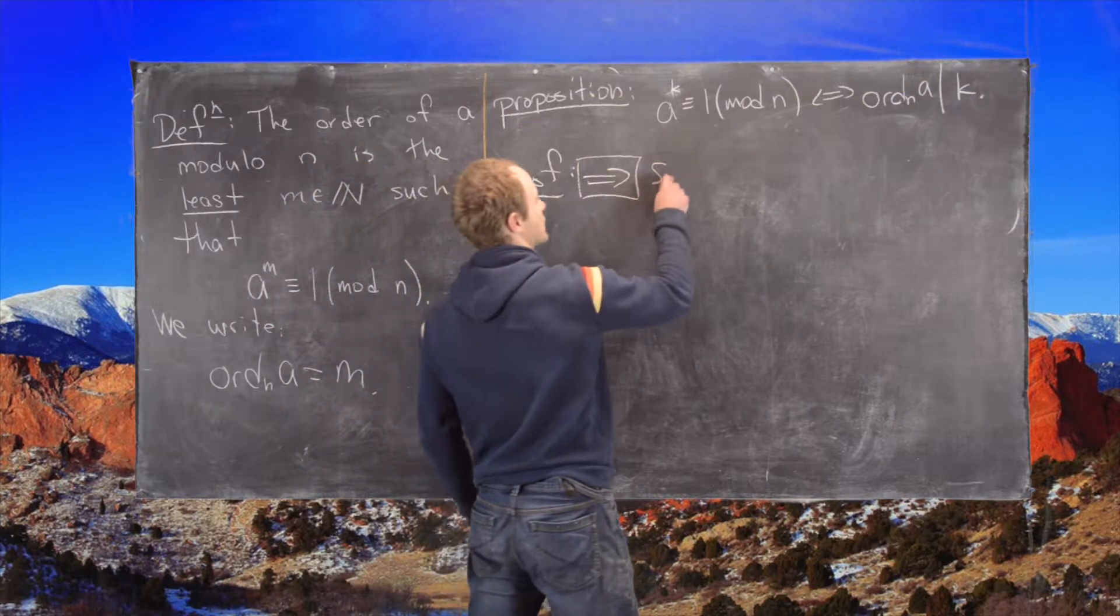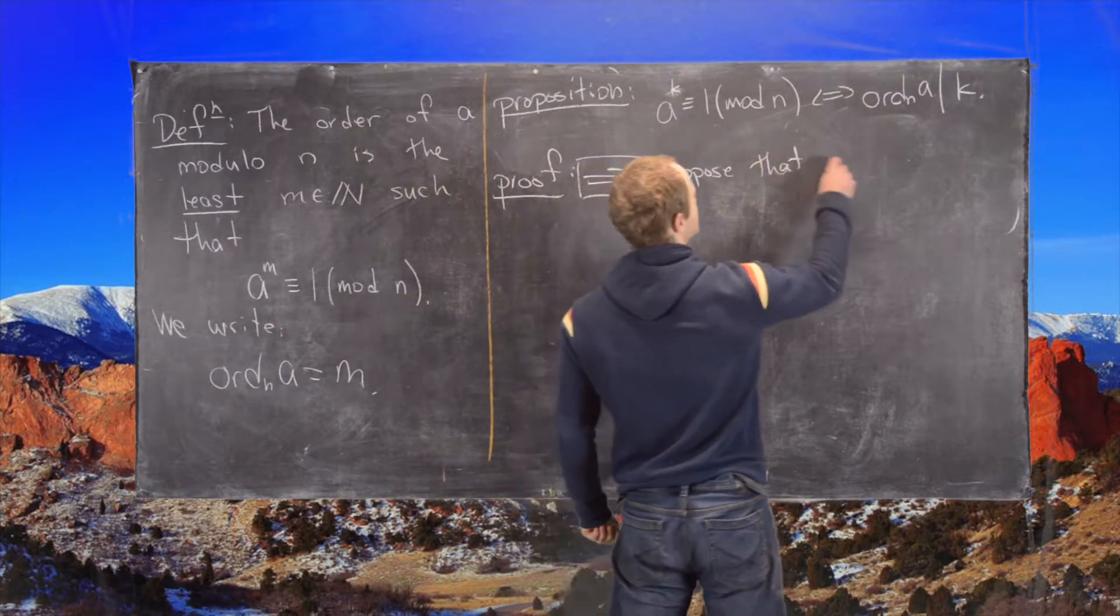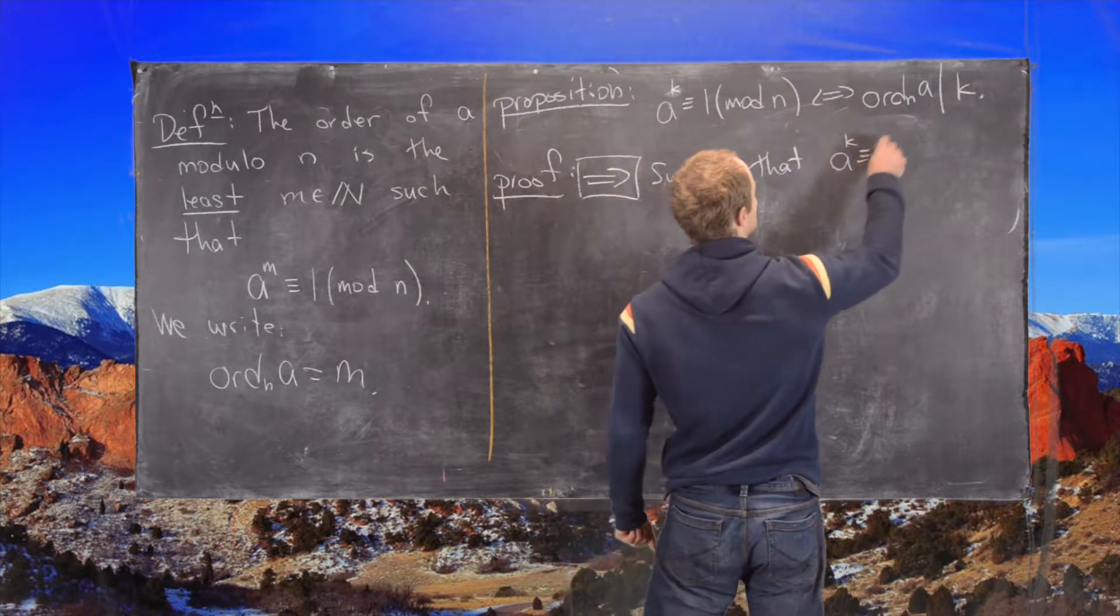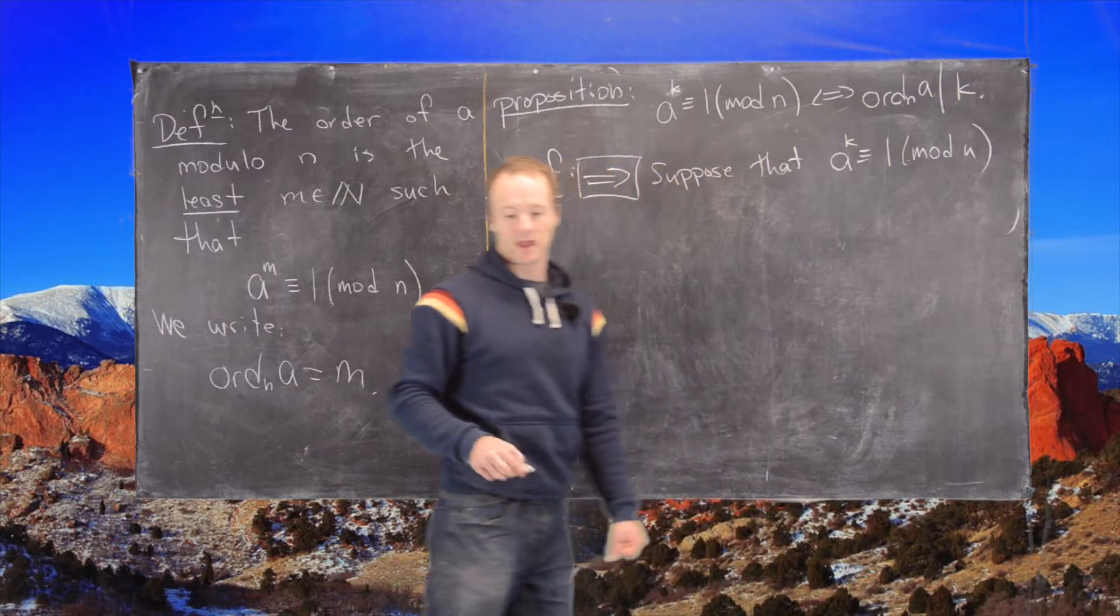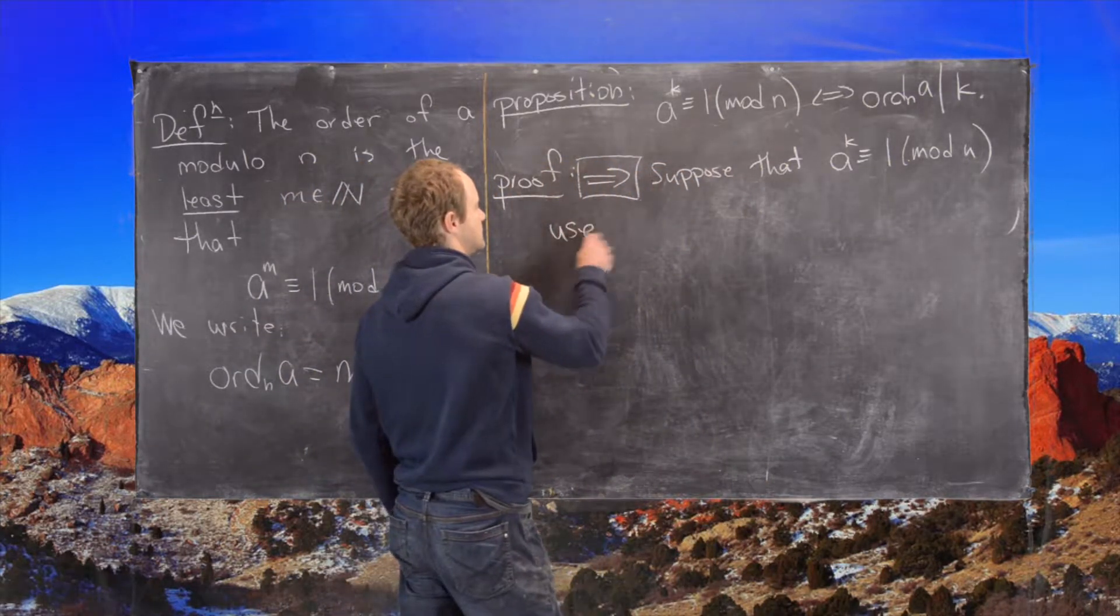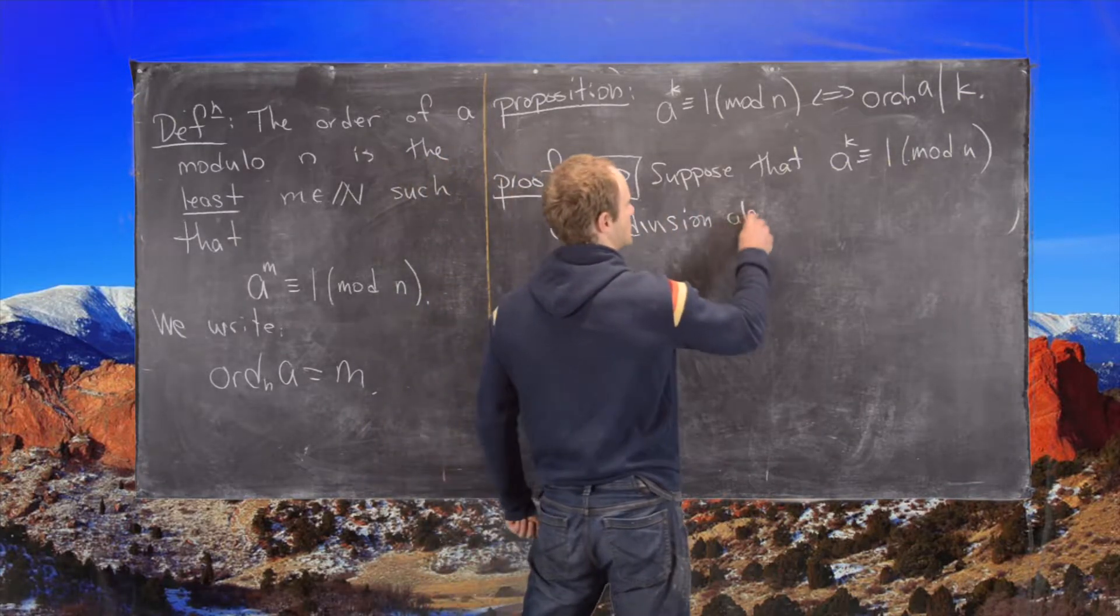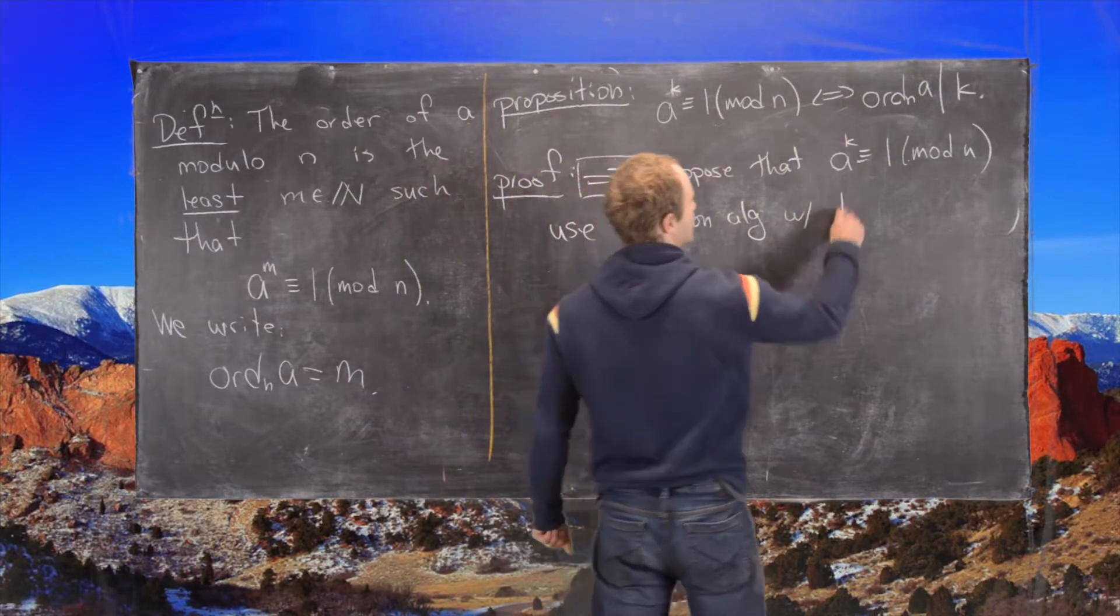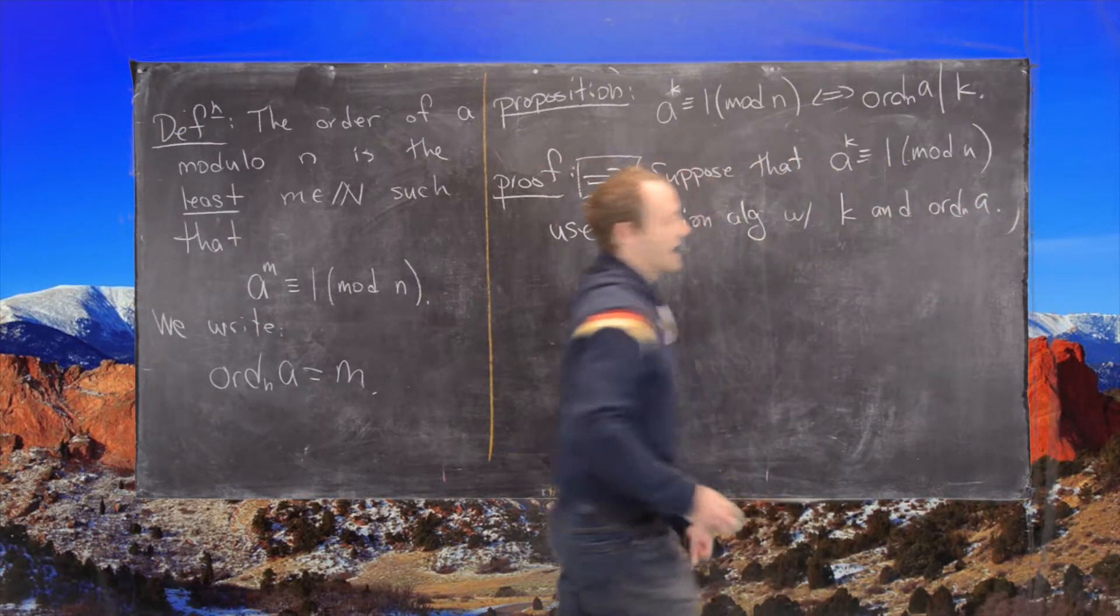So in other words, suppose that a to the k is congruent to 1 modulo n. And then use the division algorithm with k and the order of a.